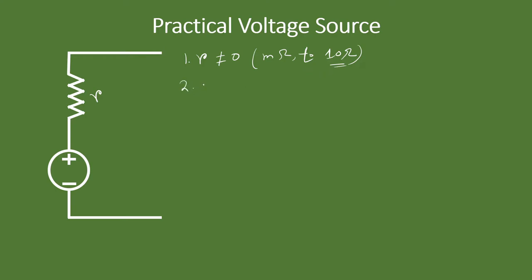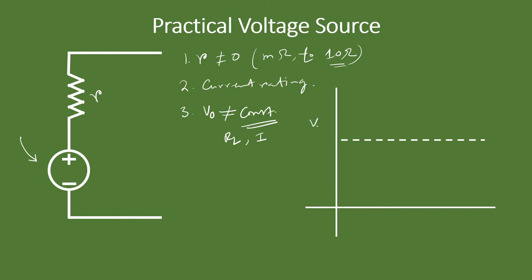Second, you cannot draw any amount of current — there is a current rating given by the manufacturer showing the suitable range of current that can be drawn. Third, the output voltage is not constant; it may change with respect to load resistance or the amount of current drawn. For non-rechargeable sources, voltage also drops with time — just like AA or AAA batteries left unused for a long time will see a significant voltage drop. A graph of output voltage versus current, load resistance, or time shows a declining trend.